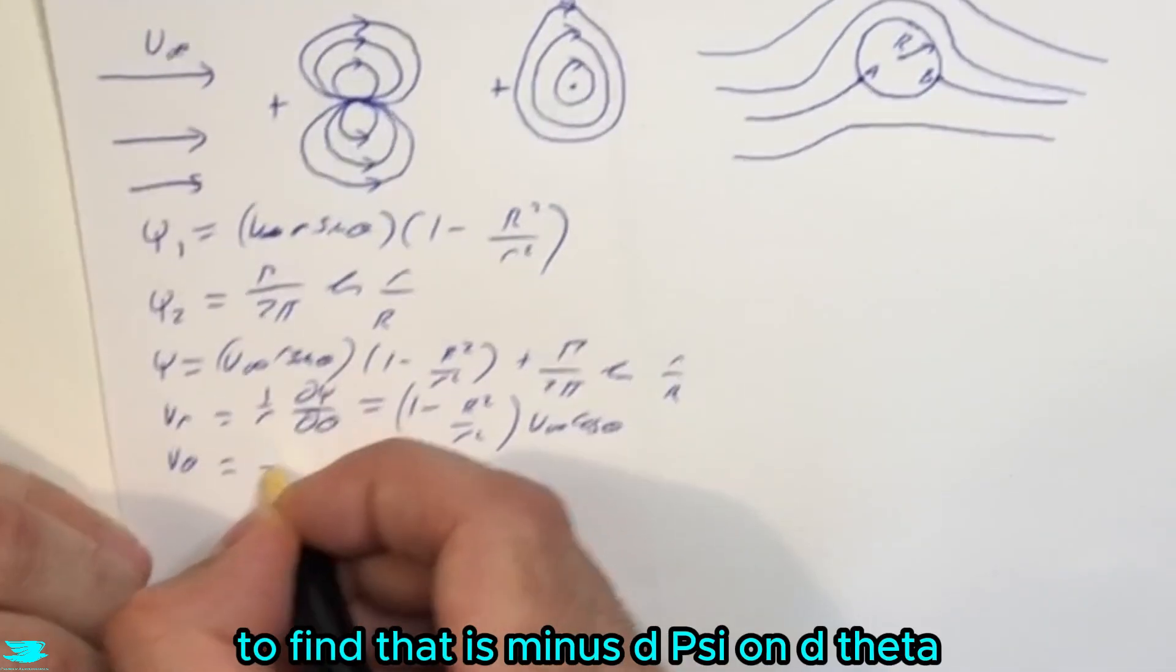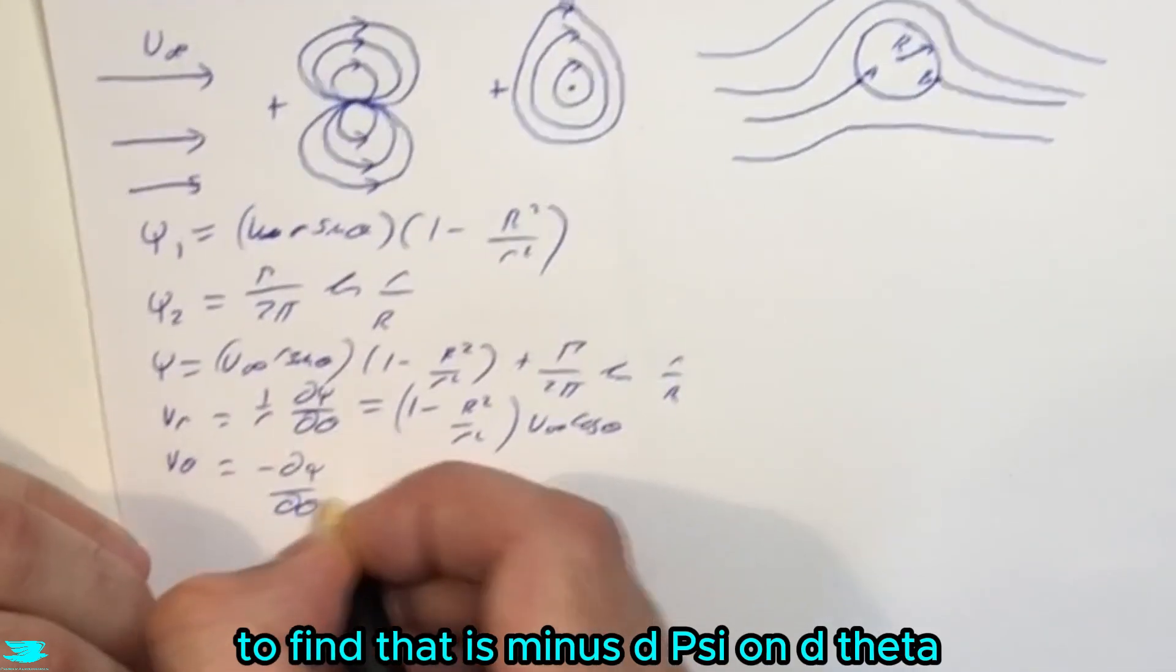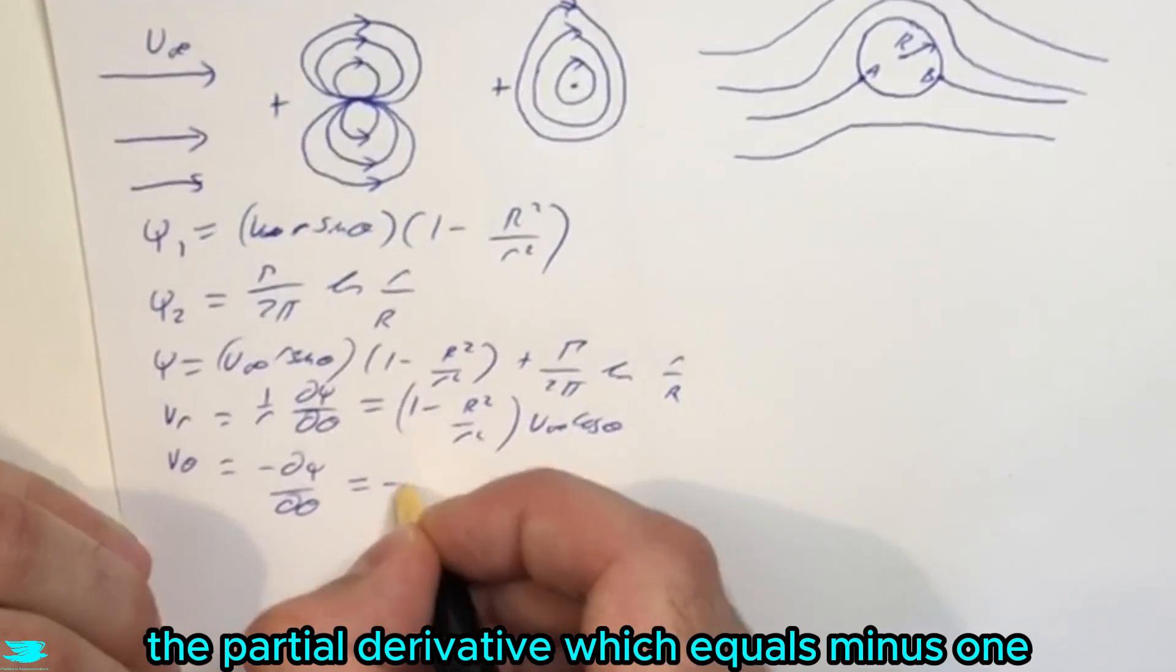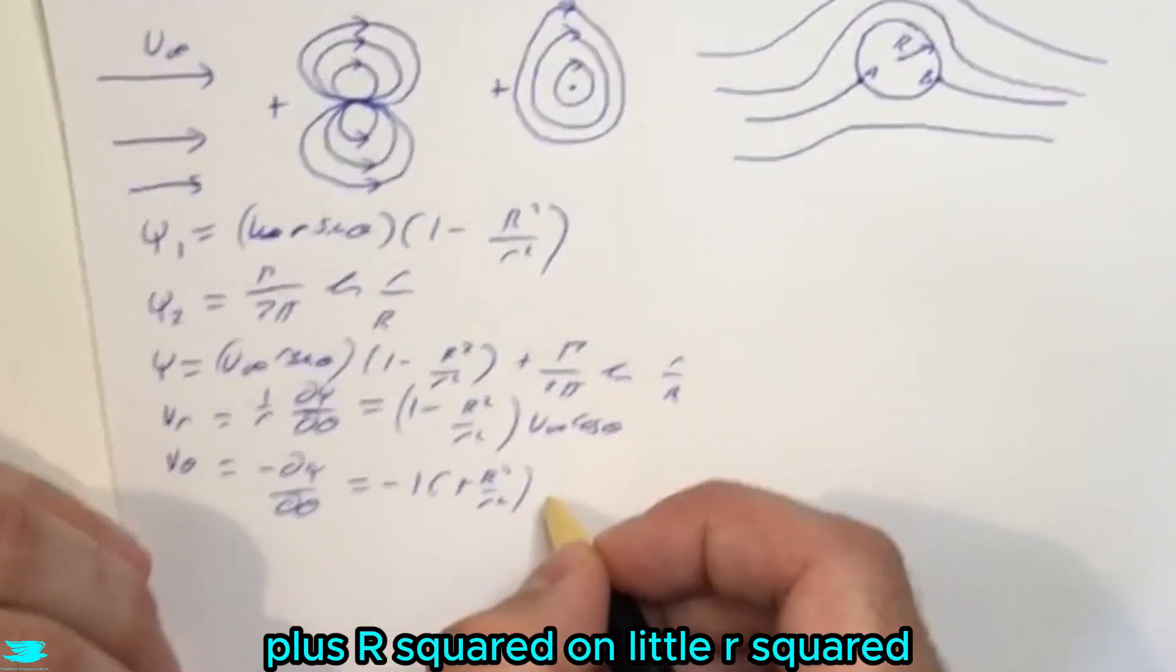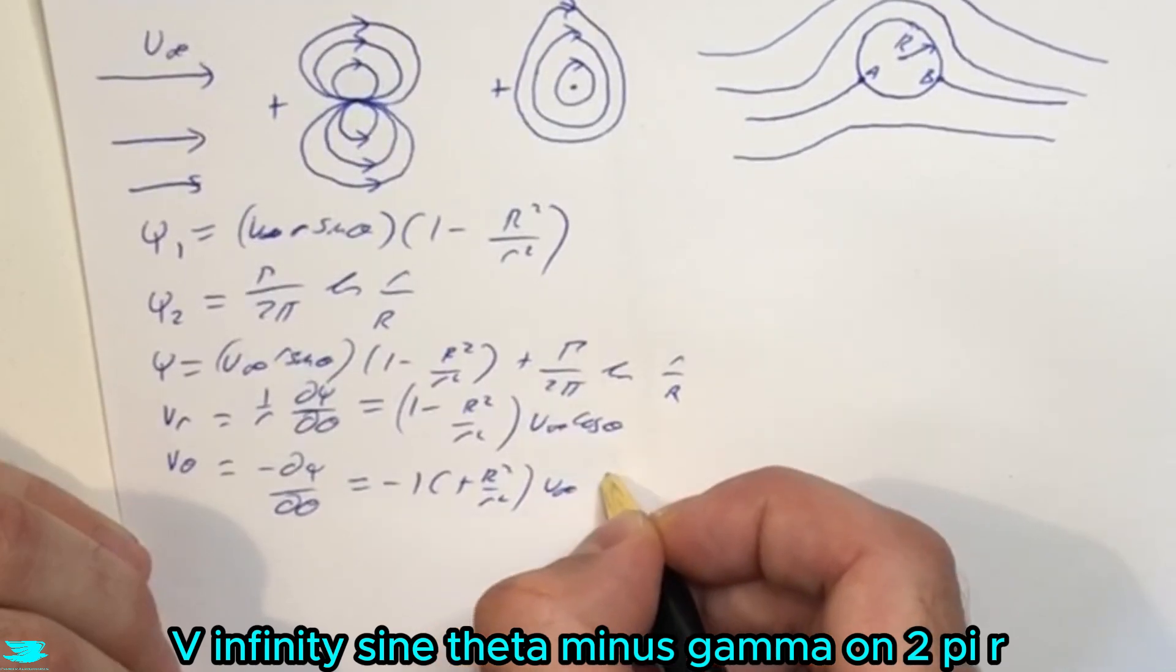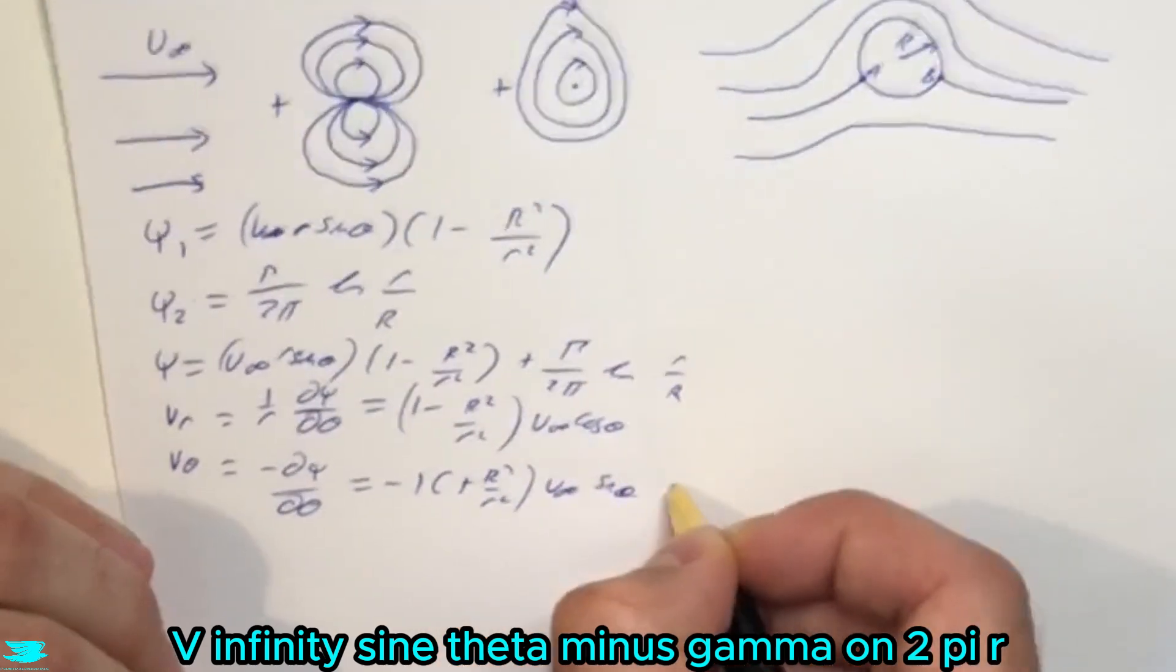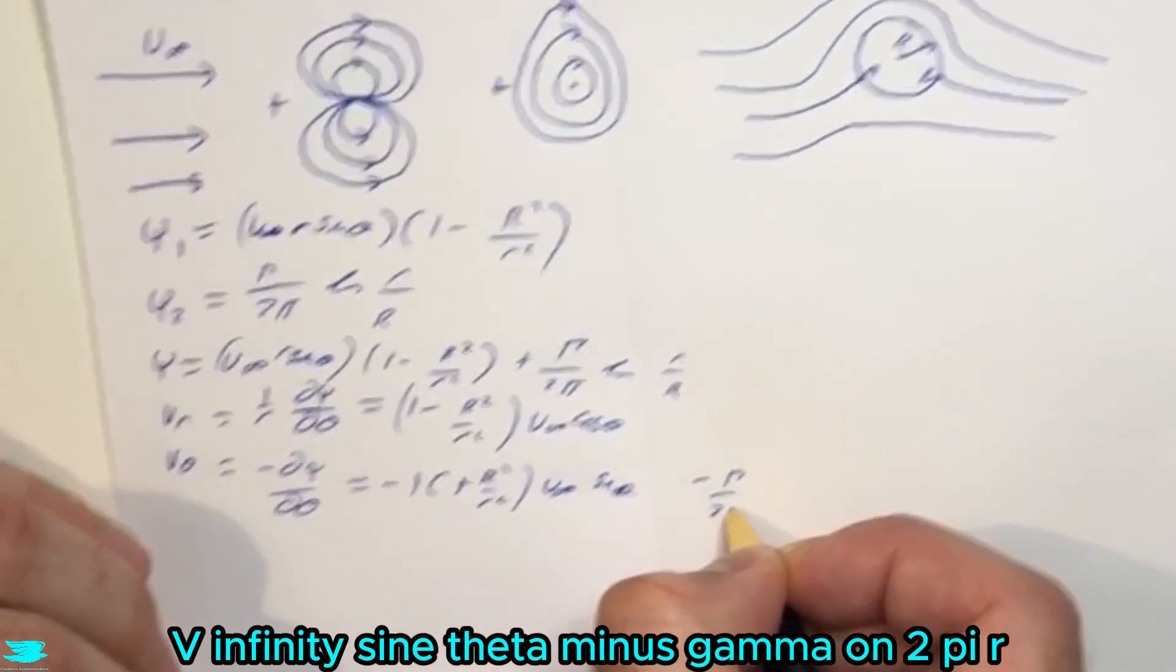And that comes out to be 1 minus R squared on R squared, capital R, little r, V infinity, cos theta. And Vtheta, to find that, is minus dPsi on dTheta, the partial derivative, which equals minus 1 plus R squared on little r squared, V infinity, sine theta, minus gamma on 2 pi r.